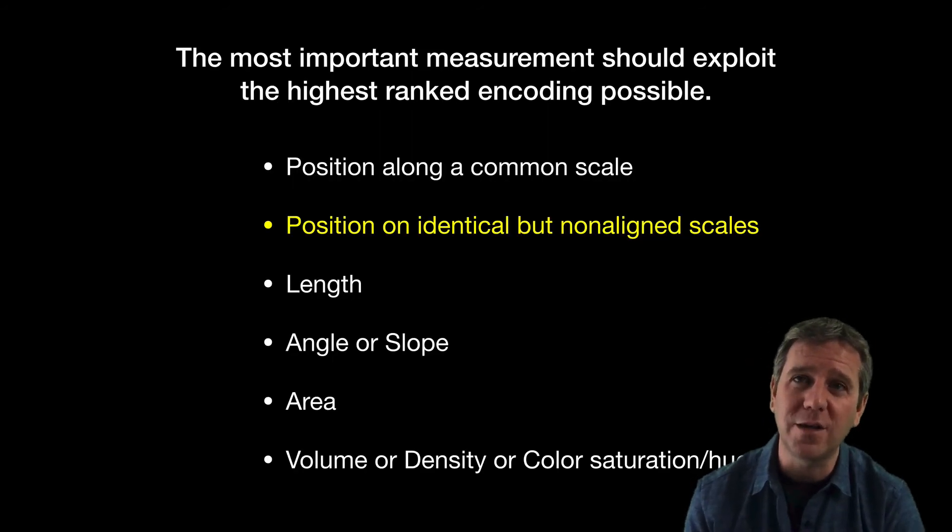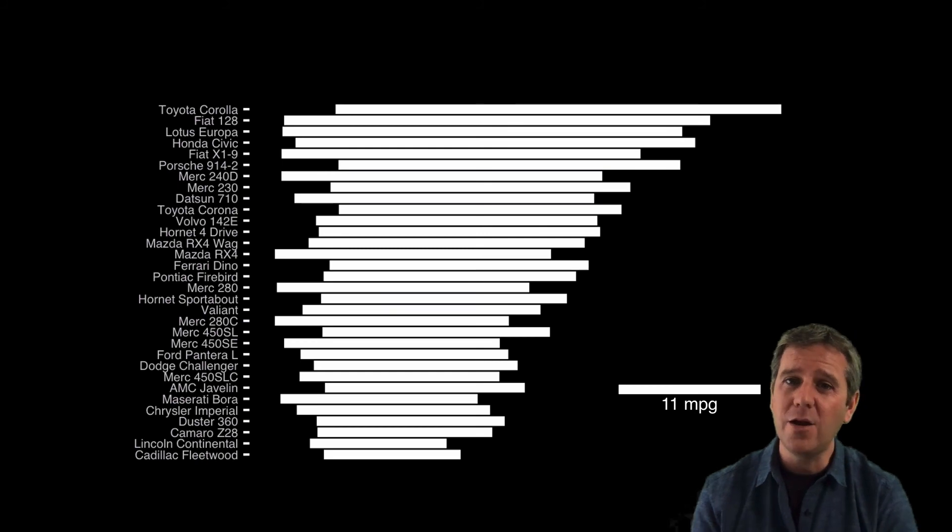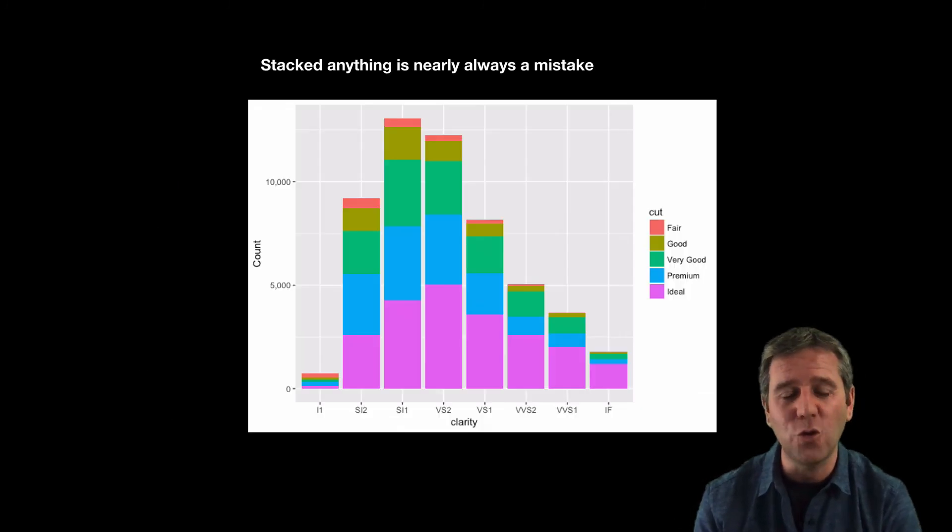Let's move on. Next we have position on identical but non-aligned scales. Here is our display of miles per gallon for those automobiles again. This is a somewhat contrived display—the axes are not aligned, so it's the width or length of the bars we're looking at. But we actually do this all the time.